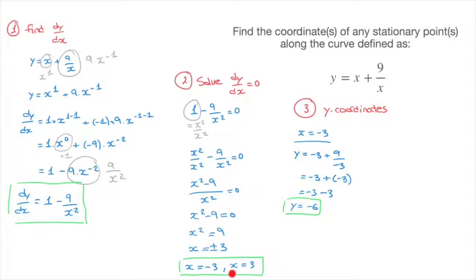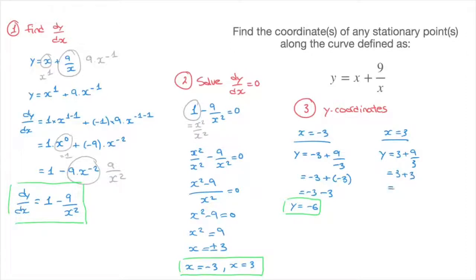Now for x equals 3: we go back to the original function and replace every x with 3. That gives y equals 3 plus 9 over 3, which is 3 plus 3, equals 6. We now have both stationary points. This function has two stationary points with coordinates negative 3, negative 6 and 3, 6.